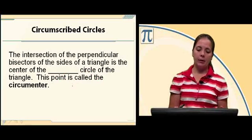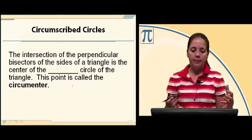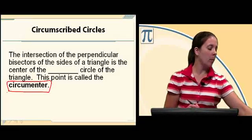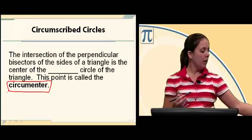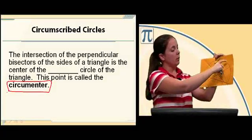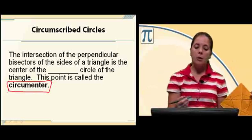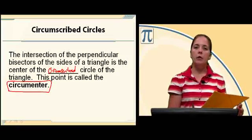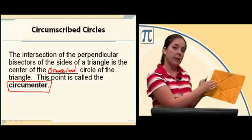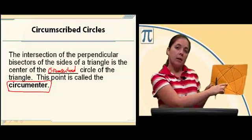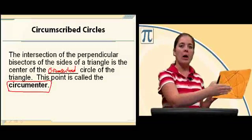The intersection of the perpendicular bisectors of the sides of a triangle is the center of the circumscribed circle. This point is called the circumcenter. So your perpendicular bisectors — draw all three of them in — the point of concurrency is called the circumcenter, and it is the center of the circumscribed circle.